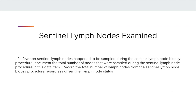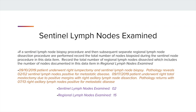If a few non-Sentinel Lymph Nodes happen to be sampled during the Sentinel Lymph Node Biopsy, then document the total number of nodes sampled in this data item. If the Sentinel Lymph Node Biopsy is performed followed by a subsequent Regional Lymph Node Dissection, record the number of Sentinel Lymph Nodes in this data item. On 9-10, the lumpectomy and Sentinel Lymph Node Biopsy was performed; two of two Sentinel Lymph Nodes were positive for mets. Subsequently, the total mastectomy was performed with the axillary lymph node dissection. Seven of 13 lymph nodes were positive for mets. The number of Sentinel Lymph Nodes examined is 2, and 15 Regional Lymph Nodes were examined.